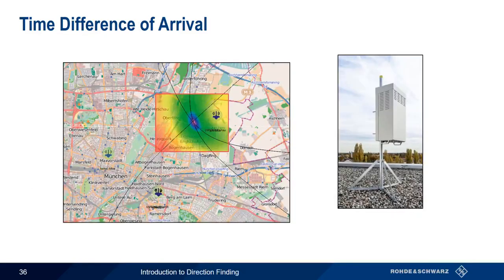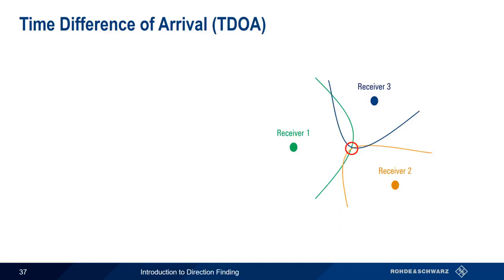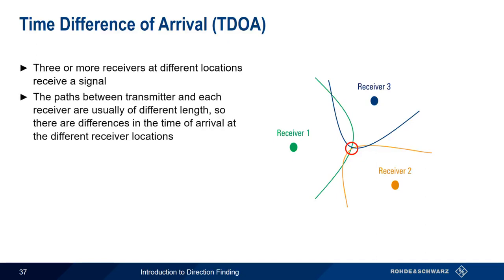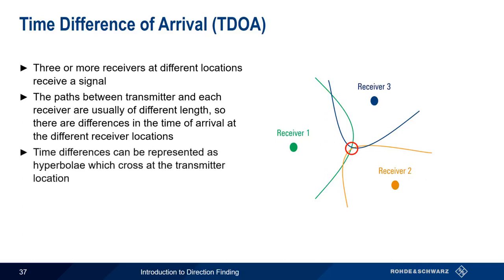The last methodology we're going to discuss is neither a power of arrival nor an angle of arrival methodology, but rather a time-based methodology, appropriately named time difference of arrival. The basic principle of TDOA is as follows: three or more receivers are placed in different locations, and all of these receivers receive a signal. In most cases, the distances between the transmitter and each receiver are different, so the time at which the signal arrives at each receiver will also be different. We can represent these time differences as curves or hyperboli, the location of the transmitter being at the intersection of these hyperboli. TDOA has sometimes been called hyperbolic direction-finding because we determine the location of the transmitter using these hyperboli.